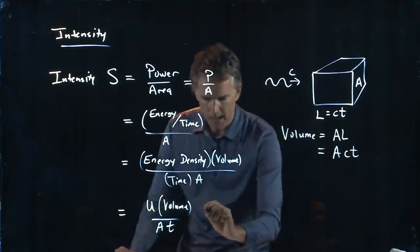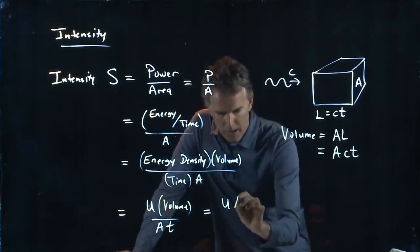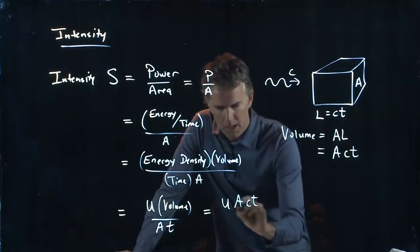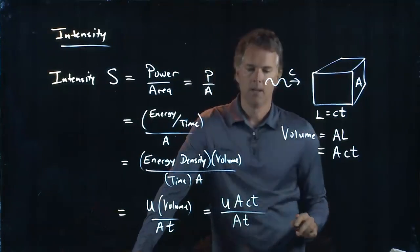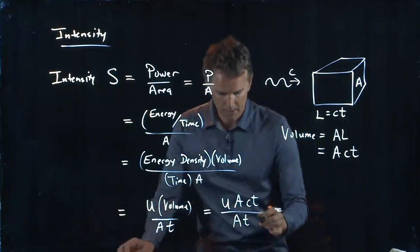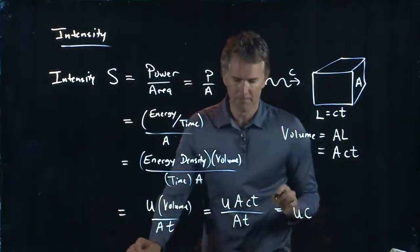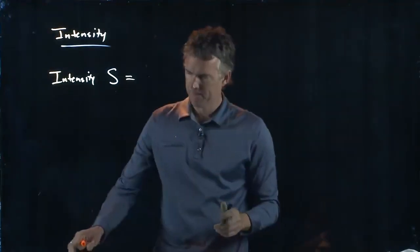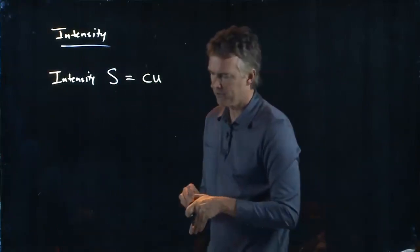So what do we get here? We get U times the volume, A, C, T, and we're going to divide it by A, T. The A's cancel out, the T's cancel out, and we just get U times C. So S is equal to U times C.